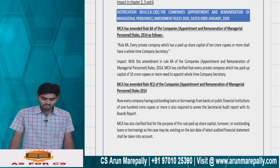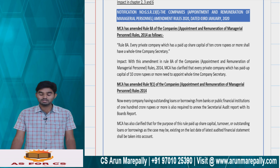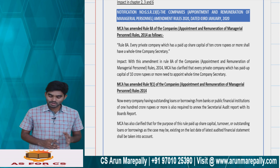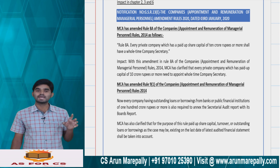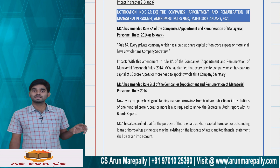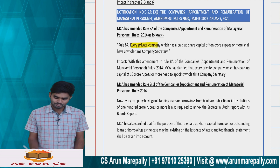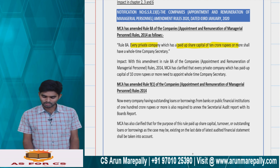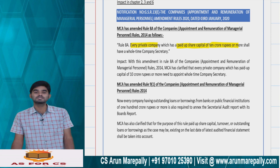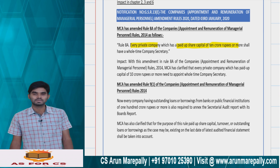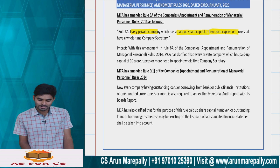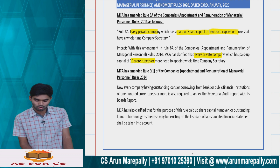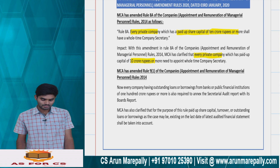The Companies (Appointment and Remuneration of Managerial Personnel) Amendment Rules 2020, dated 3rd January 2020: the limit for appointment of a company secretary in private limited companies has been increased from ₹5 crores to ₹10 crores. Rule 8A has been amended — every private company having a paid-up share capital of ₹10 crores or more shall have a whole-time company secretary. Earlier it was ₹5 crores; now it has been raised to ₹10 crores.